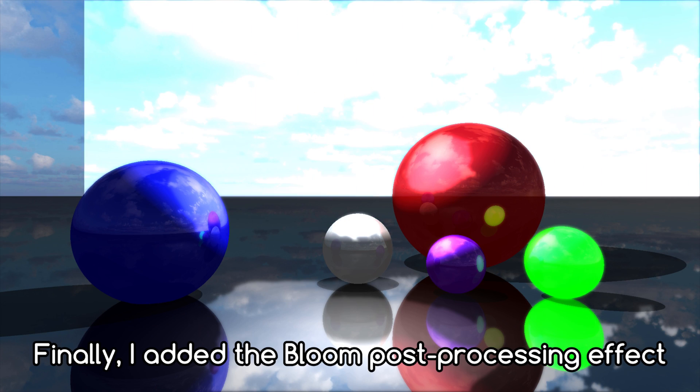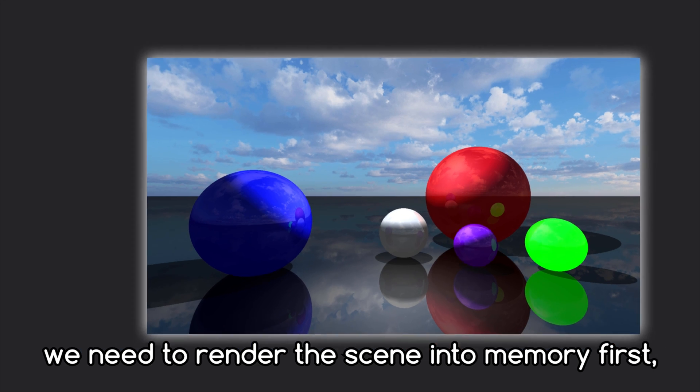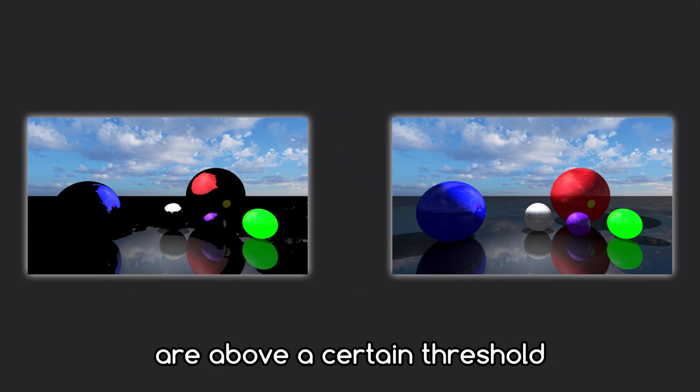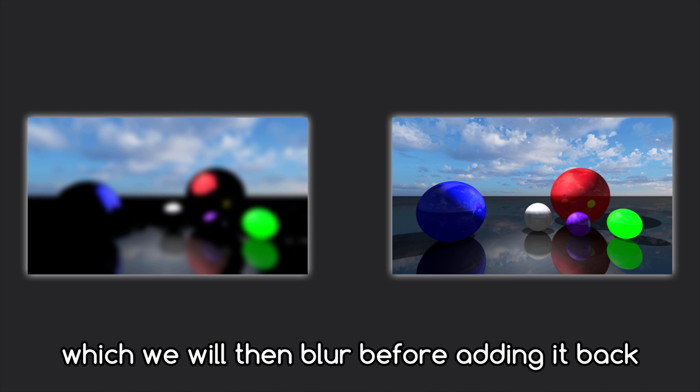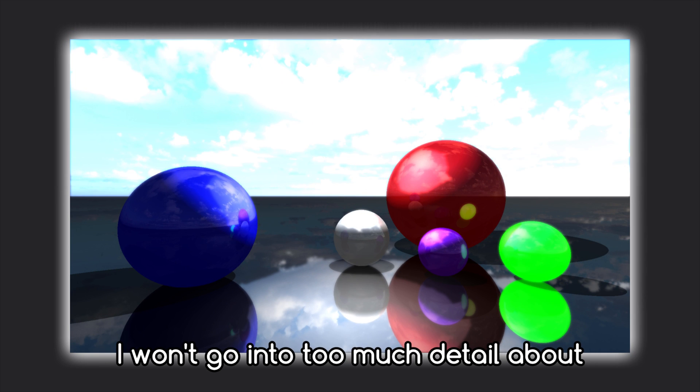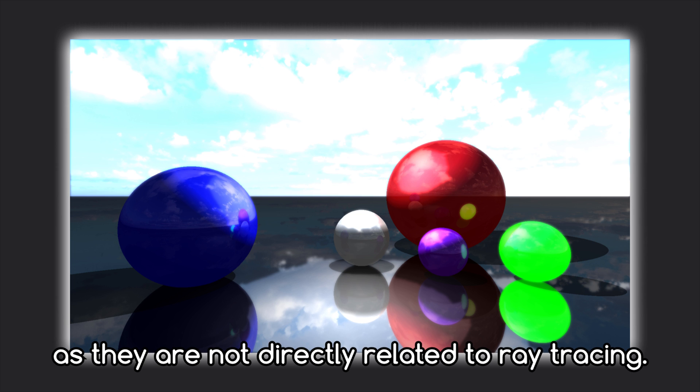Finally, I added a bloom post-processing effect to make the emissive areas glow. To create this effect, we need to render the scene into memory first and then copy all pixels which brightnesses are above a certain threshold to a separate image, which we will then blur before adding it back onto the full image and then drawing it all to the screen. I won't go into too much detail about these last two techniques, as they are not directly related to ray tracing.